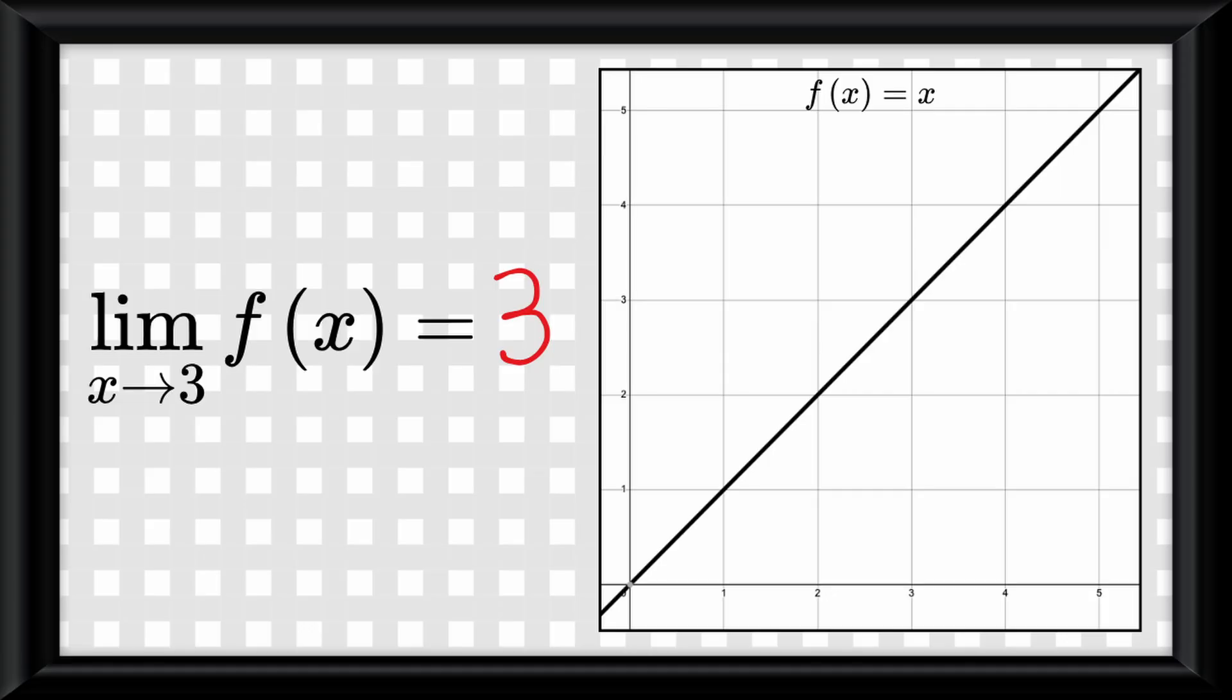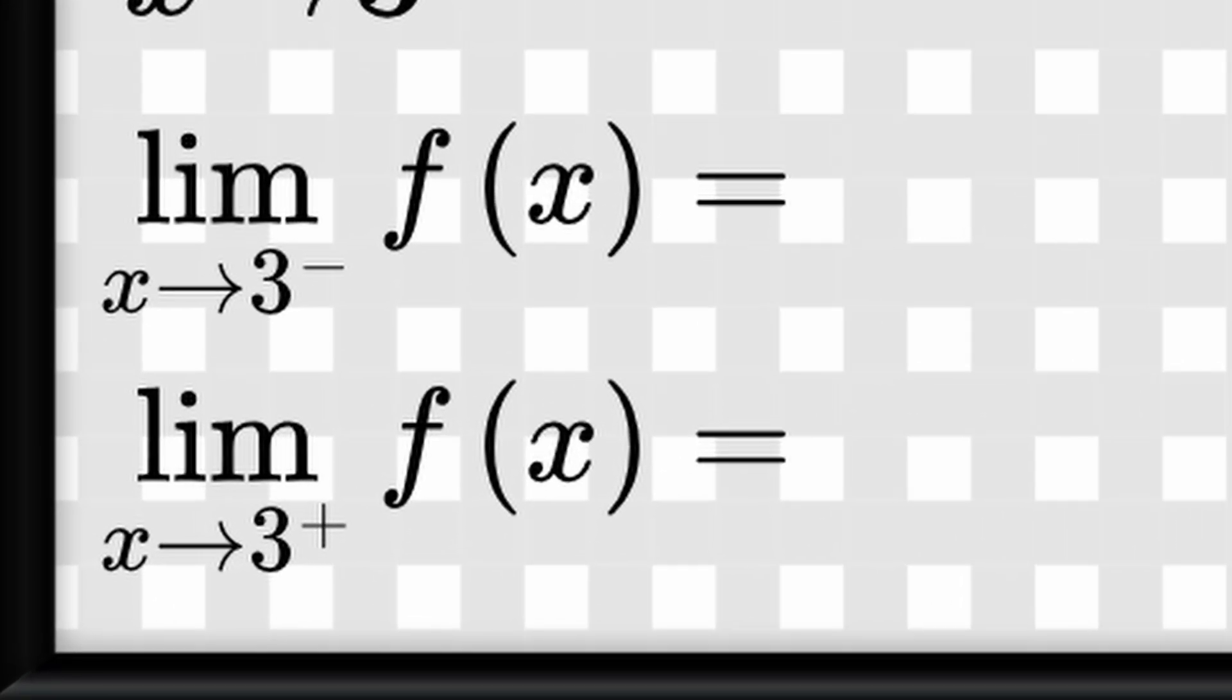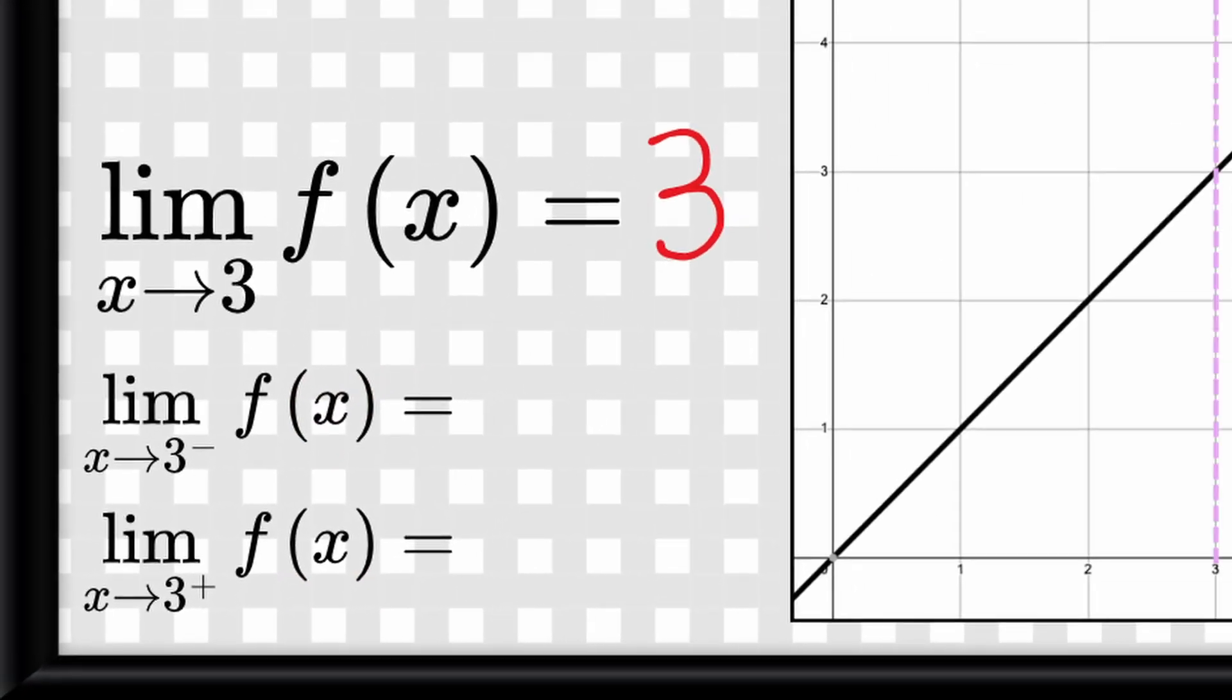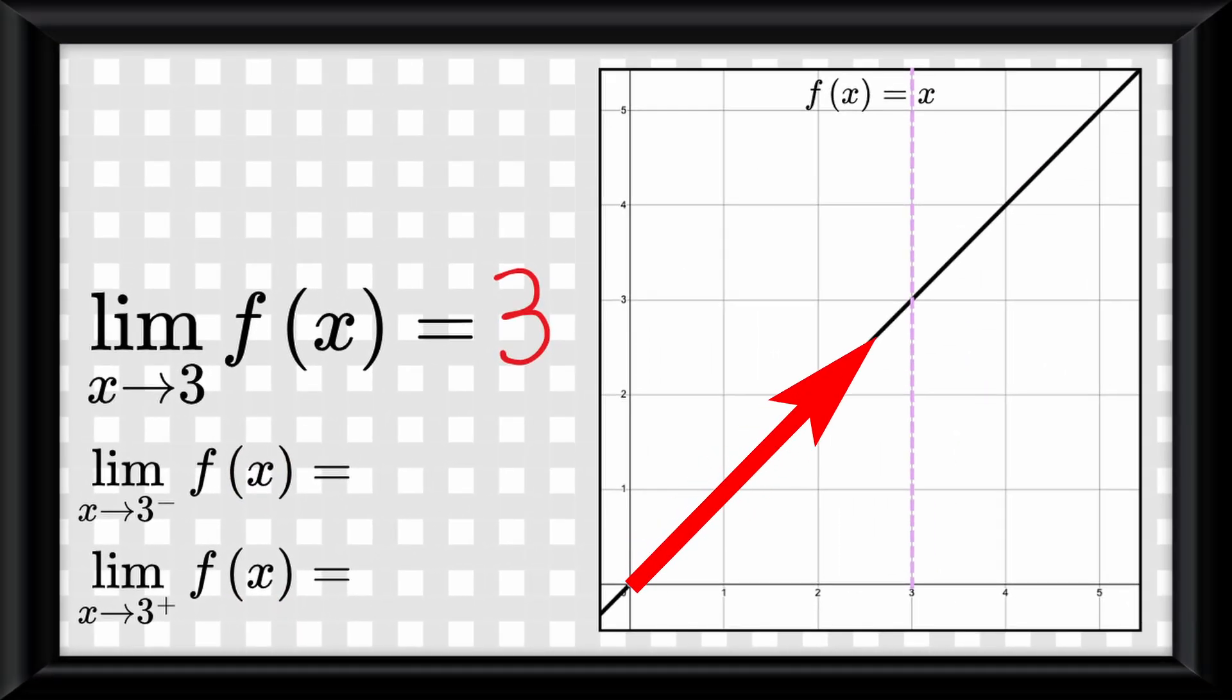We can take this even further by taking the plus and minus limits. Remember, minus is approaching from the left, plus is approaching from the right. So let's see here. Approaching from the left, we would be approaching 3. And approaching from the right, it would also be 3. But this is a pretty easy example.